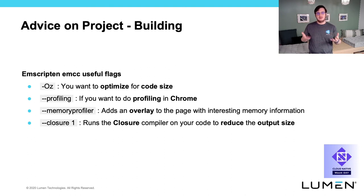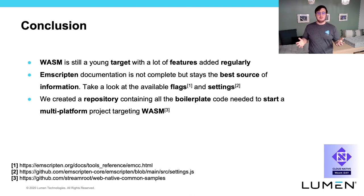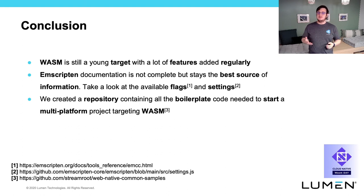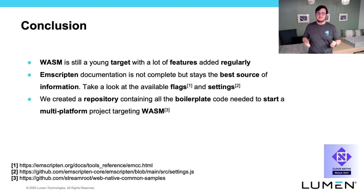And finally, '--closure 1' enables the Closure Compiler to optimize the JavaScript glue code generated by EMScripten. In conclusion, I presented a few key points that helped us successfully deploy Wasm in production, but this list is far from exhaustive — I simply kept the most important ones. Please keep in mind that Wasm is still a very young target and moves really fast. EMScripten documentation is not finalized and you will often have no other choice than finding the correct solution by trial and error. EMScripten offers a long list of flags and settings to help you during development, and I put a link to the corresponding documentation on this slide.